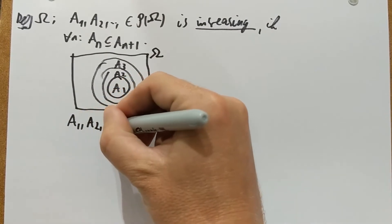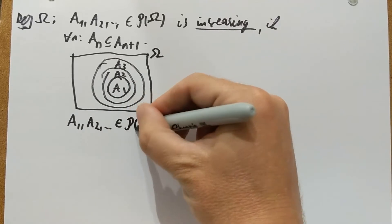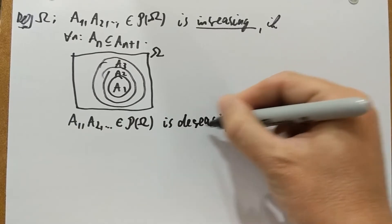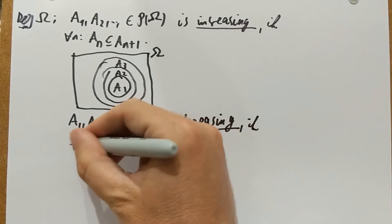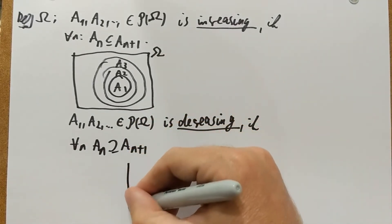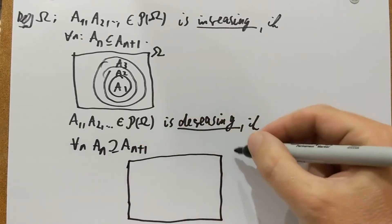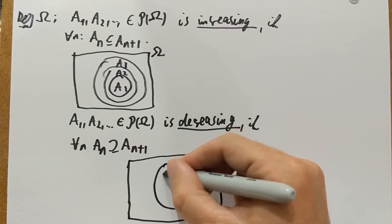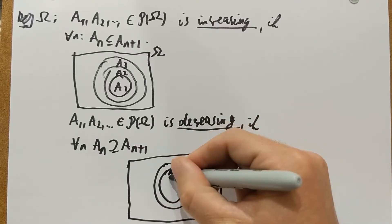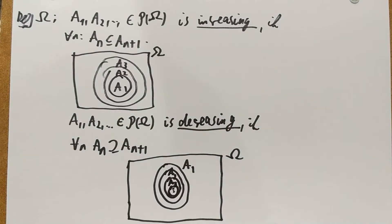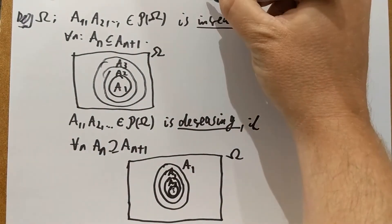Similarly, A1, A2, and so on — again just subsets of omega — form a decreasing sequence if for every n, A_n contains A_{n+1}. The picture is: you have the big set omega, then A1 contains A2, which contains A3, which contains A4 and so on. It's clear that these sets are getting smaller and smaller, while in the increasing case they are getting larger and larger. That's the definition of increasing or decreasing sets.